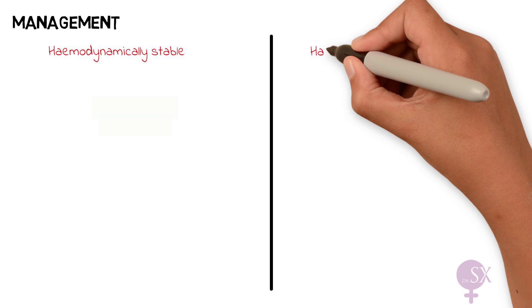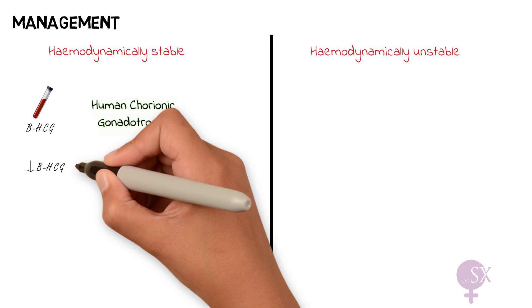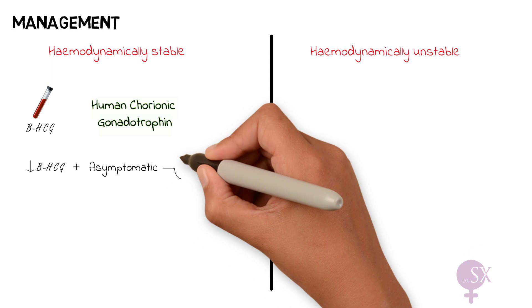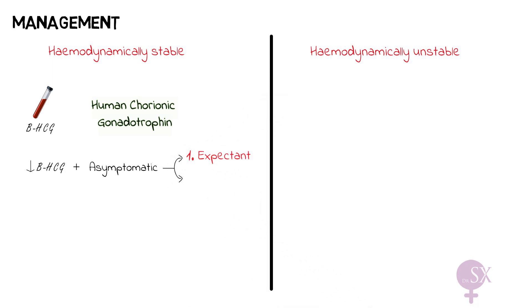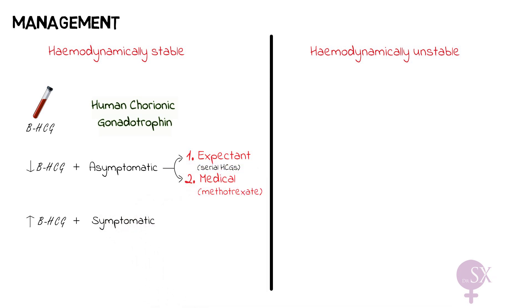How do we manage these patients? Management is divided depending on whether the patient is hemodynamically stable or unstable. For hemodynamically stable patients, a beta-HCG — human chorionic gonadotrophin, essentially a marker of pregnancy — needs to be taken. If the beta-HCG is low and the patient is asymptomatic, we have two options: expectant management, where we watch and wait taking serial HCGs to see if the patient eliminates the ectopic on her own, or medical management using methotrexate, which requires close monitoring. If the beta-HCG is high and the patient is symptomatic, surgical management is required.